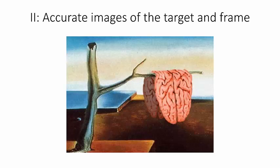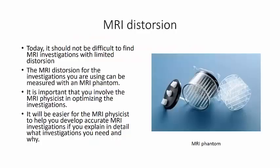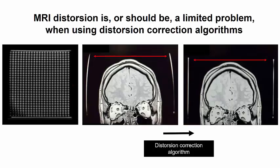We further need accurate images of the target and frame. Concerning MRI distortion. Today, it should not be difficult to find MRI investigations with limited distortion. The MRI distortion for the investigations you are using can be measured using an MRI phantom. And it is important that you involve the MRI physicist in optimizing the investigations. It will be easier for the MRI physicist to help you develop accurate MRI investigations if you explain in detail what investigations you need and why. MRI distortion is or should today be a limited problem, especially when using distortion correction algorithms.